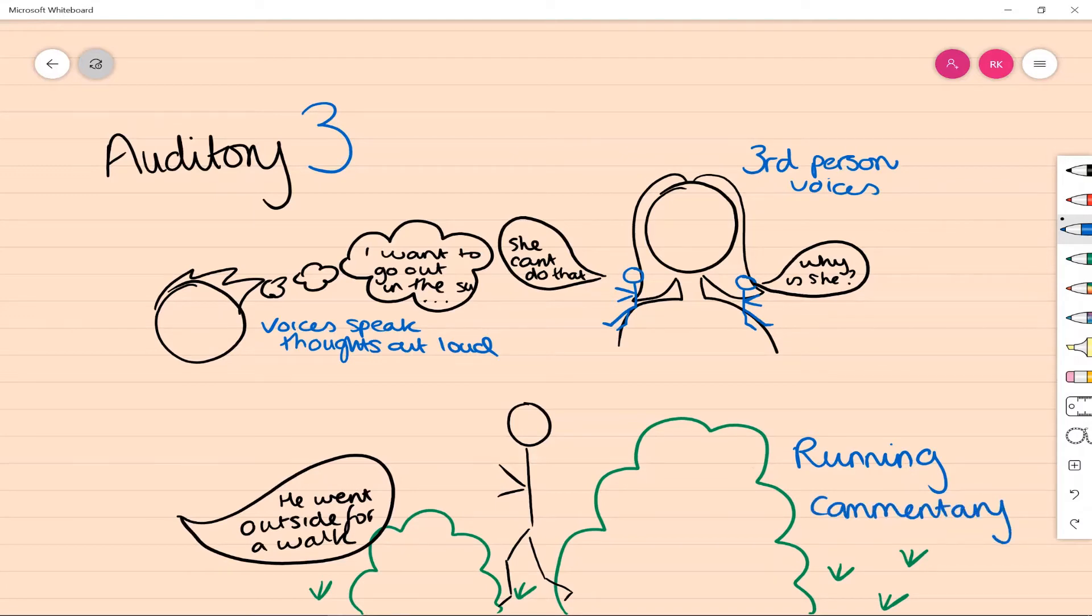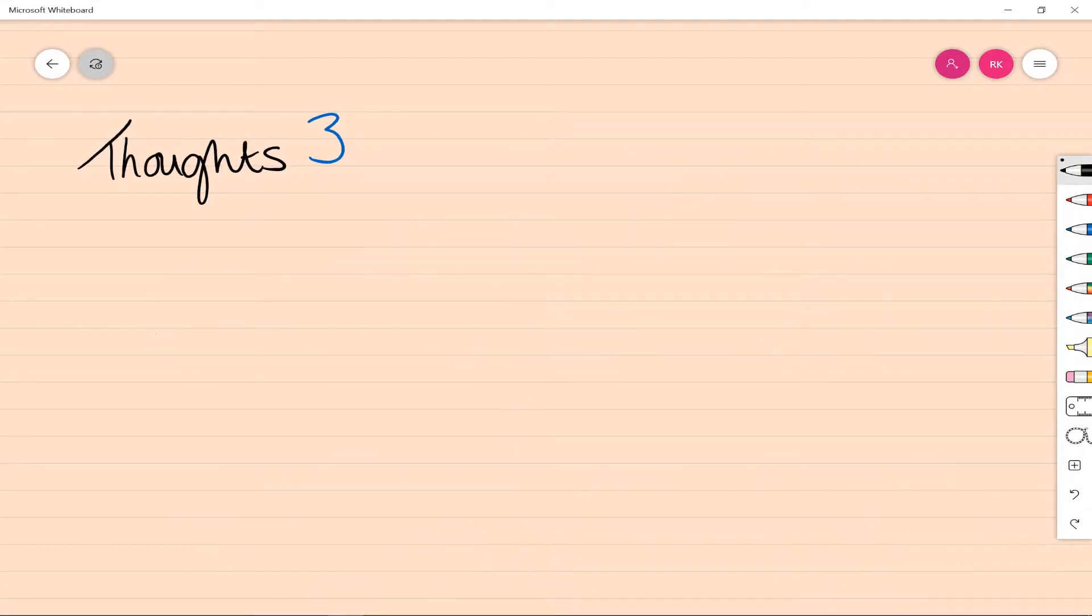Next, we consider thoughts. This describes interference in the person's thinking process. In some cases, people may feel as if their thoughts can be heard by others. This is termed thought broadcasting, and it feels like everyone around them knows what they're thinking, which can be really difficult.